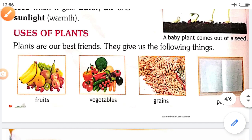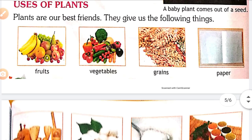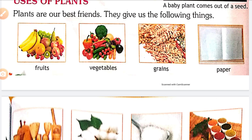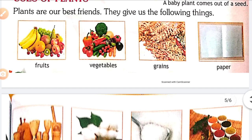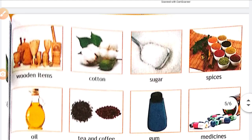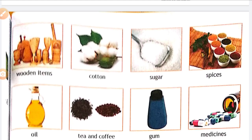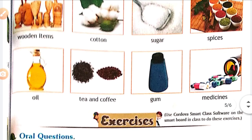Now we will see the uses of plants. Plants are our best friends. They give us: fruits, vegetables, grains, paper, wooden items, cotton, sugar, spices, oil, tea and coffee, gum, and medicines.